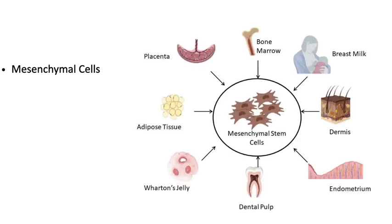Mesenchymal cells are derived from the mesenchyme — the fetal supporting tissue. They are star-shaped and can transform into whatever cell type is required depending on the proper stimulus. They are smaller than fibroblasts but staining and appearance is similar. They can form and change into any required cell.